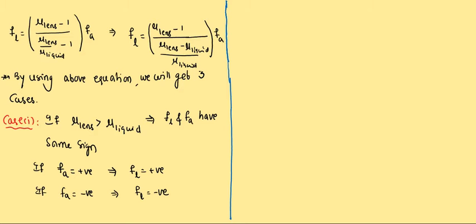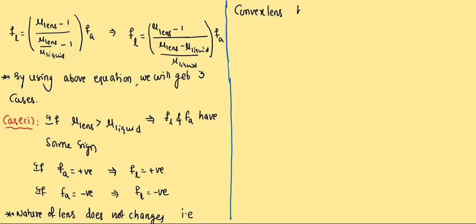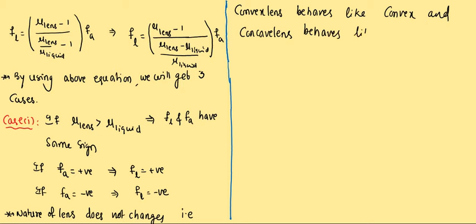That means if FA is positive, FL is also positive, and if FA is negative, FL is also negative. The nature of the lens does not change. Convex lens behaves like convex and concave lens behaves like concave after dipping in the liquid.